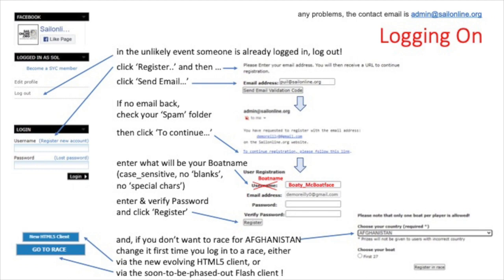Once you have registered, click on either 'GoToRace' or 'New HTML5 Client' under one of the races in the right-hand column. The GoToRace button takes you to the original Flash interface and the New HTML5 button takes you to the new HTML5 client. That client is still in development but working very well and already has more functionality than the Flash client. Flash is about to be dropped by various browsers, so best to go straight to HTML5. Unfortunately, the rest of this presentation is about the Flash client, but there isn't really that much difference.